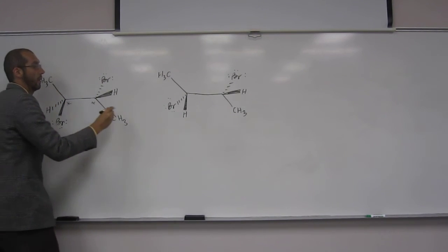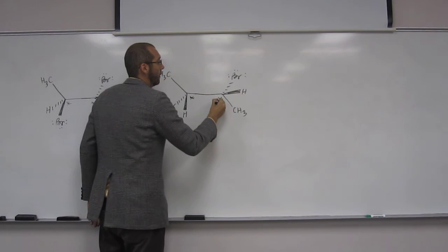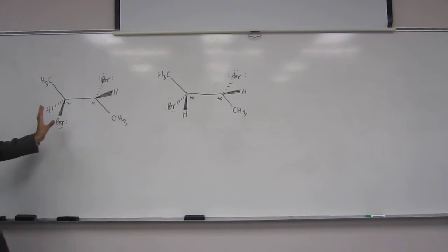We have two stereocenters in each of these molecules. One of them's the same and one of them's opposite. So what are they called? What's the relationship between them?